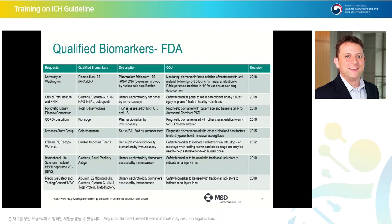On this slide, we list all of the biomarkers qualified by the FDA. This includes the first qualified biomarker in 2008 by the Predictive Safety Testing Consortium, which looked at urinary nephrotoxicity biomarkers assessed by immunoassay. These included albumin, beta-2 microglobulin, cystatin C, KIM-1, total protein, and trefoil factor 3 — safety biomarkers to be used with traditional indicators to indicate renal injury in rat.